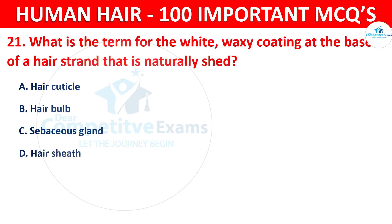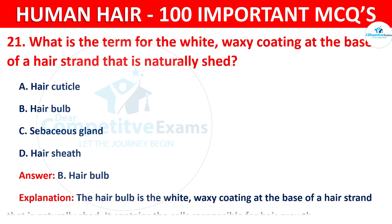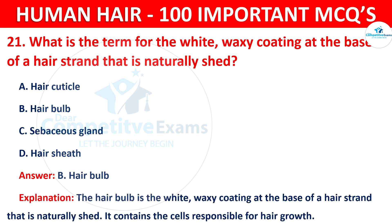The correct answer is B — hair bulb. The hair bulb is the white waxy coating at the base of a hair strand that naturally sheds. It contains the cells responsible for hair growth.